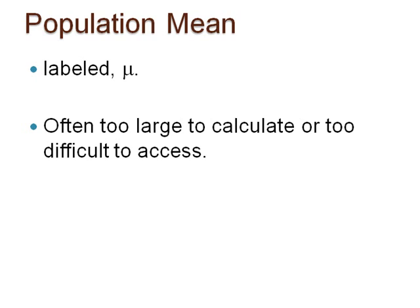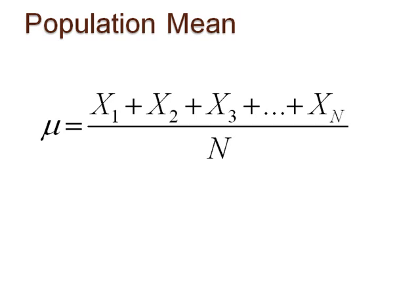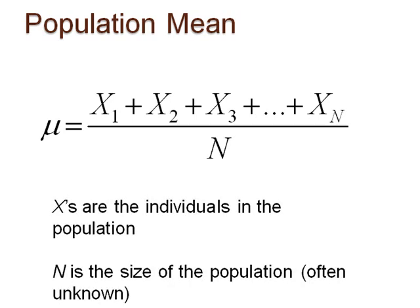Looking at the formula for the population mean, we know that we have to add up all the values in the population and divide by the total number of values, labeled capital N. However, if all the values of a specific variable in the population are unobtainable, then the population mean is unknown, and we will need to estimate it. How do you think we can estimate the population mean? Pause here to reflect on this.